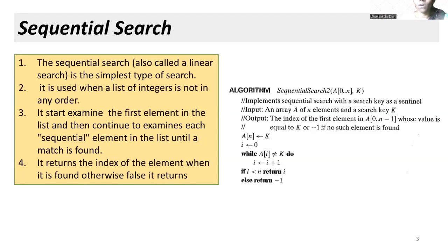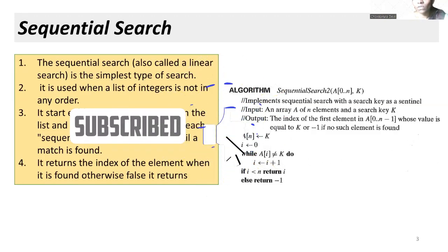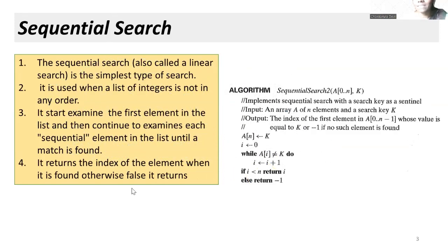Coming to sequential search, which we simply call linear search — this is the simplest algorithm for searching and is used where a list of integers is not in any order. This algorithm starts by examining the first element from the given list and compares whether it is the element you are searching for. If not, it continues to the next element in the sequence until it finds the element or exits the list without finding it. It returns the index of the element if found, or returns false — meaning the element is not found. This algorithm uses a brute force technique.